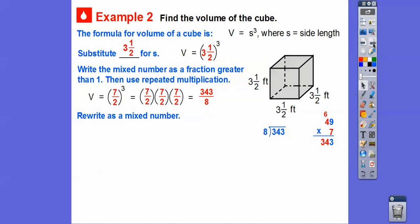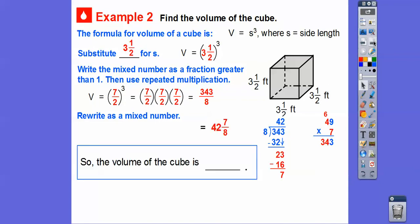Now let's rewrite 343/8 as a mixed number. Divide 8 into 343: 8 goes into 34 four times, giving 32; subtract to get 2, bring down 3 to get 23. Eight goes into 23 twice, which is 16; subtract to get a remainder of 7. So reading top to bottom: 42 and 7/8. The volume of this cube is 42 and 7/8 cubic feet. Take care, you guys.